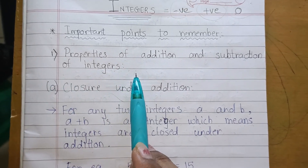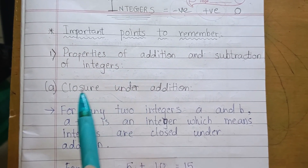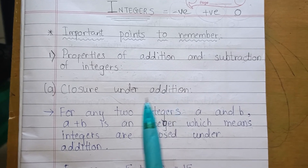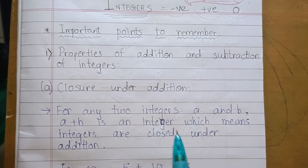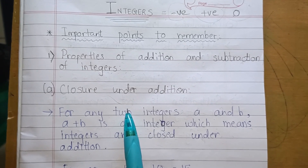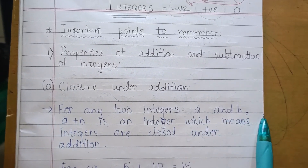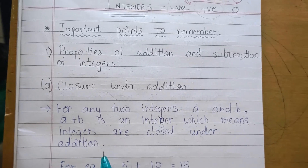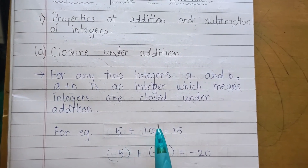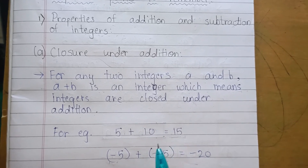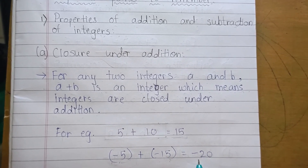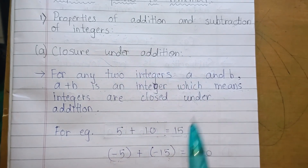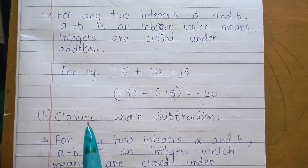There are two properties — first, Closure Under Addition. Closure under addition means: for any two integers a and b, a plus b is an integer. This means integers are closed under addition. For example, 5 plus 10 — both are integers and the answer 15 is also an integer. Another example: minus 5 plus minus 15 equals minus 20 — all three are integers. So integers are closed under addition.